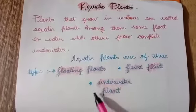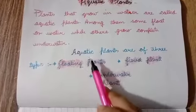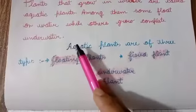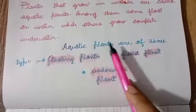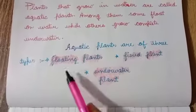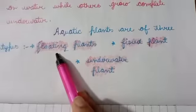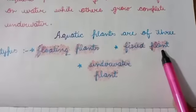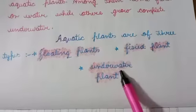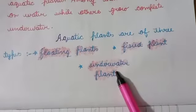Now we will see the types of the aquatic plants. Aquatic plants are of three types: first, floating plants; second, fixed plants; third, underwater plants.